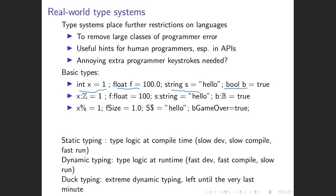You'll have noticed some languages require the programmer to write these type identifiers, like C, and other languages like Python don't. Notations may vary a little. In type theory it's common to use the colon symbol, so you write the variable name then colon and its type - so x colon int means the same thing as int x, or f colon float, or b colon bool.